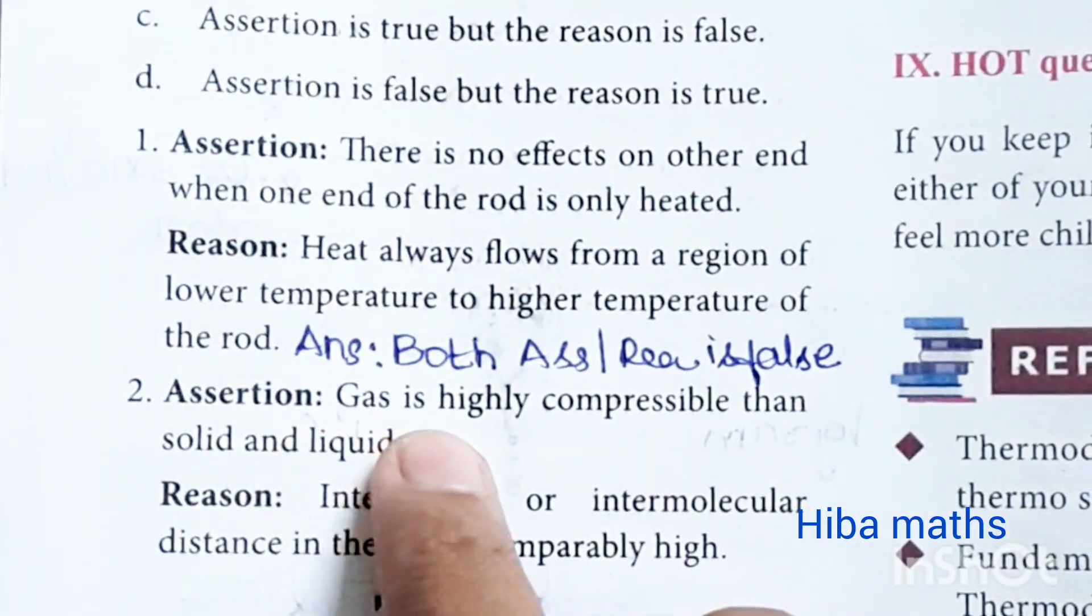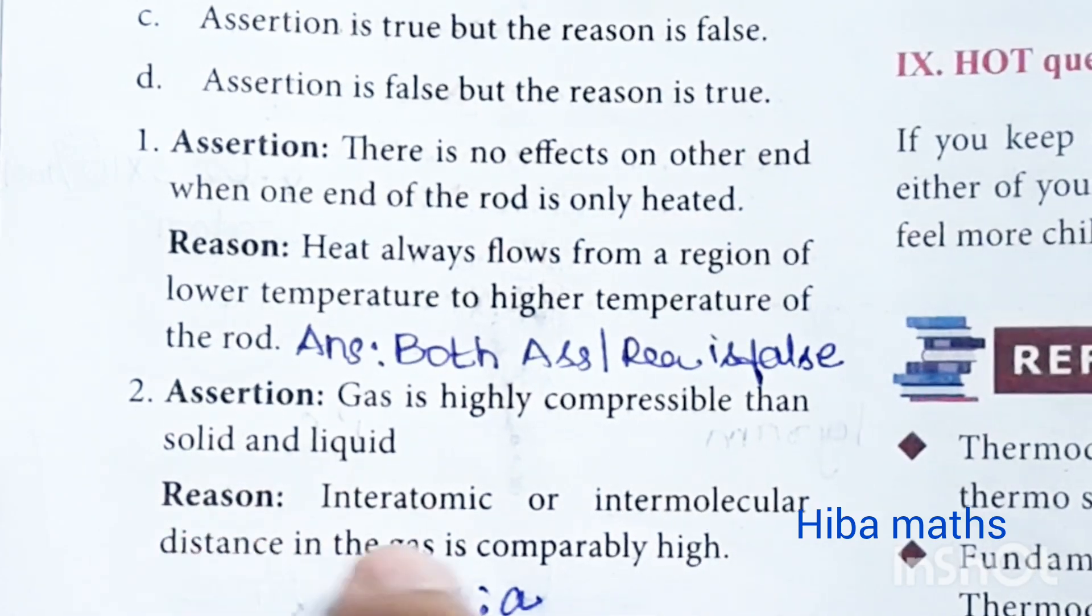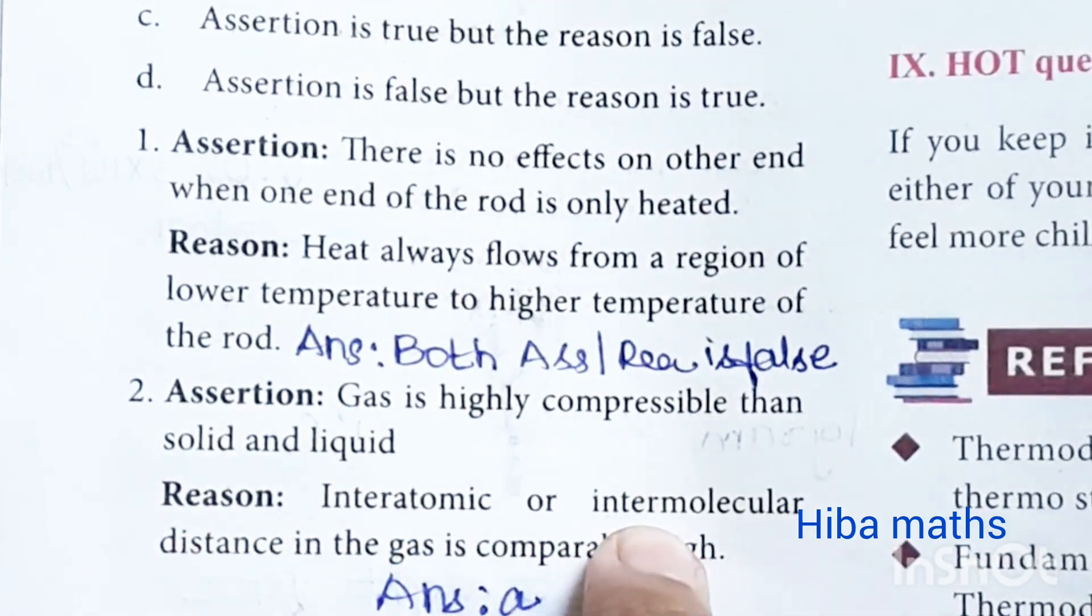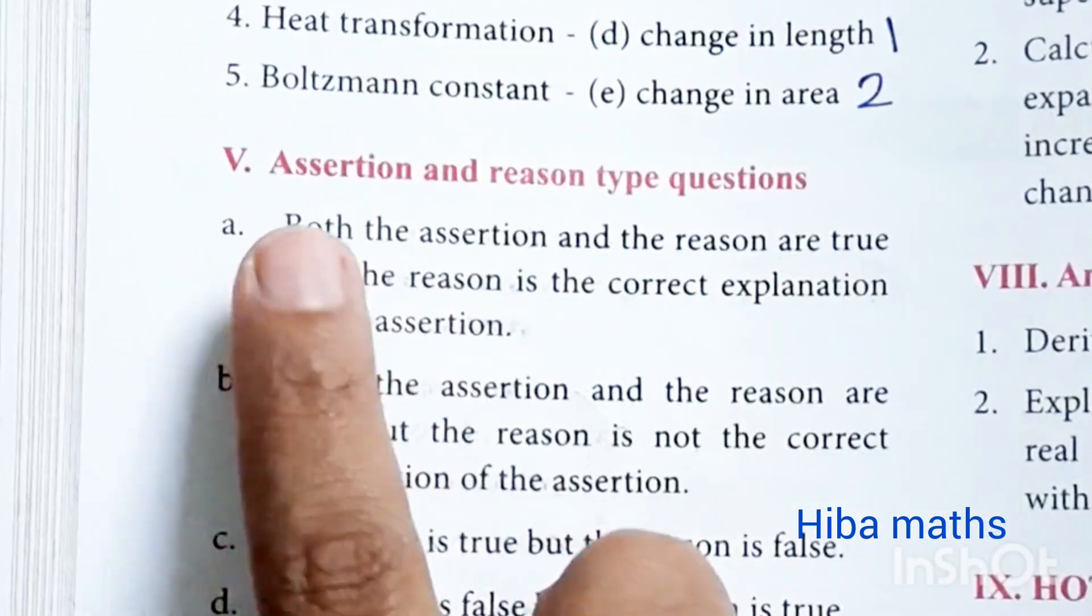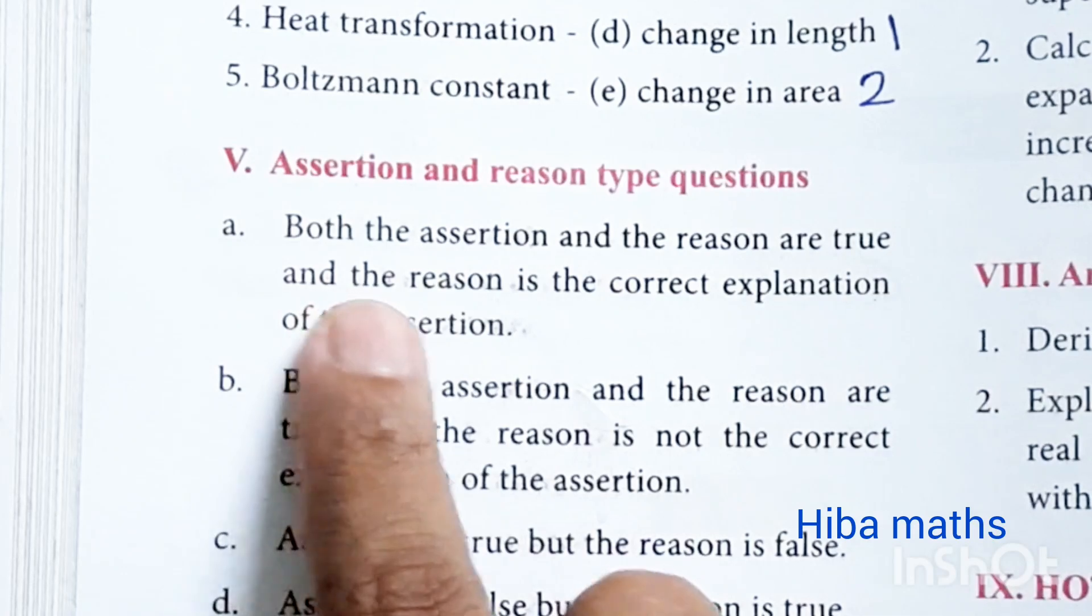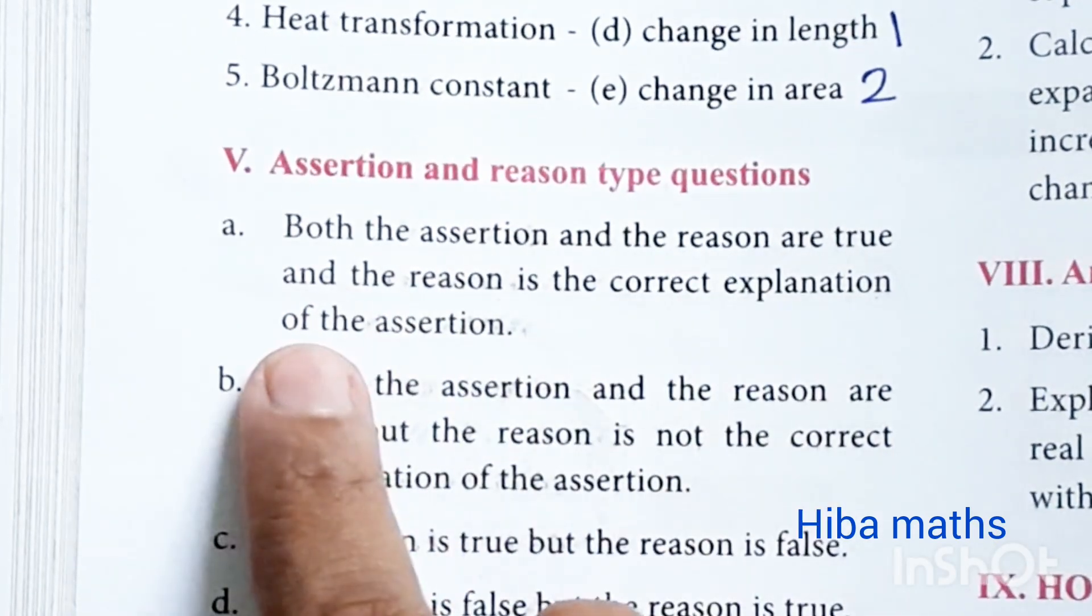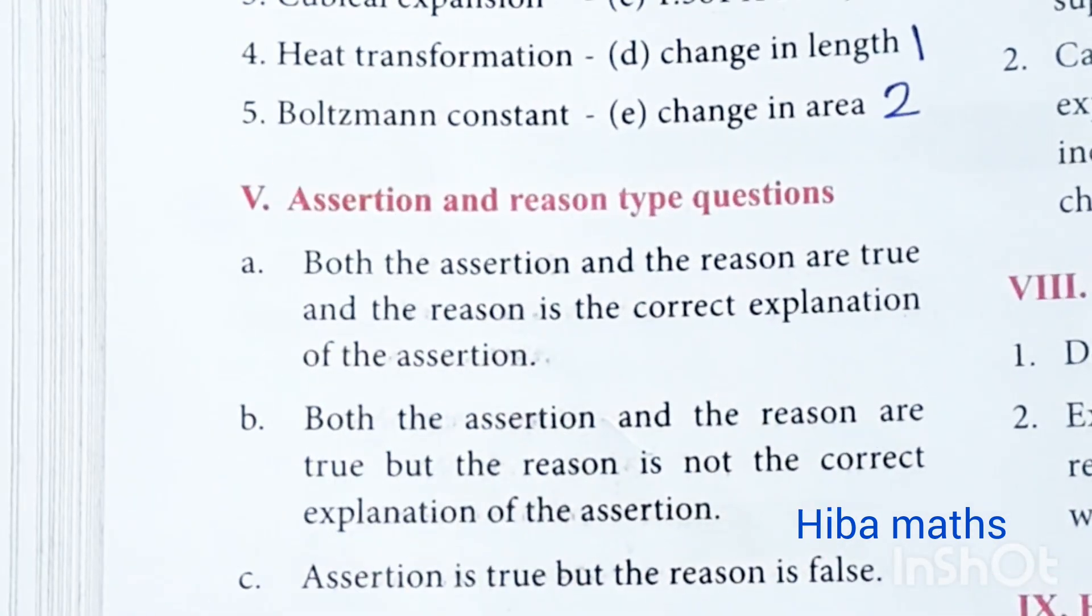Second: Gas is highly compressible than solid and liquid. Reason: inter-atomic or inter-molecular distance in gas is comparably high. The answer is A. Both assertion and reason are true, and the reason is the correct explanation of the assertion.